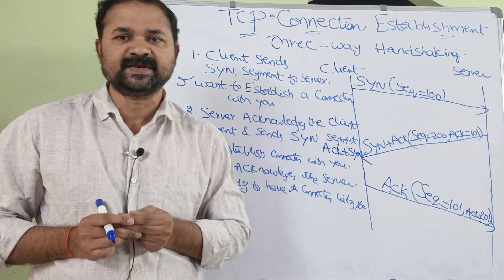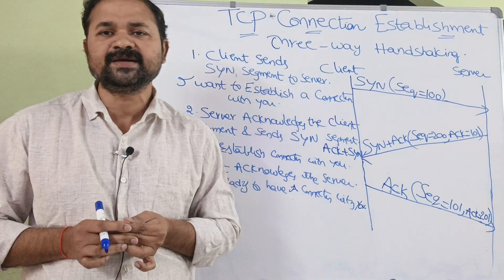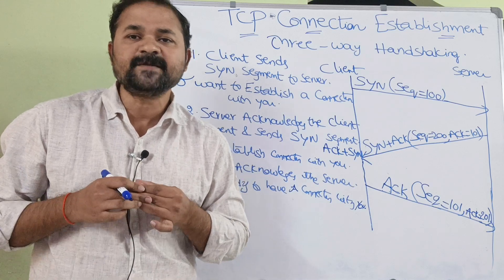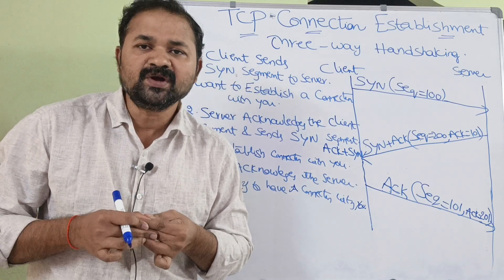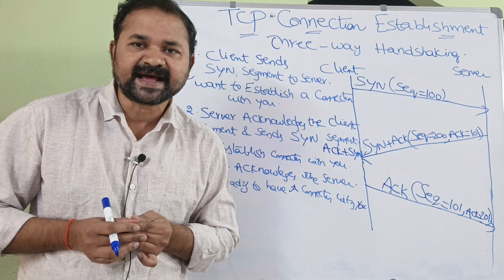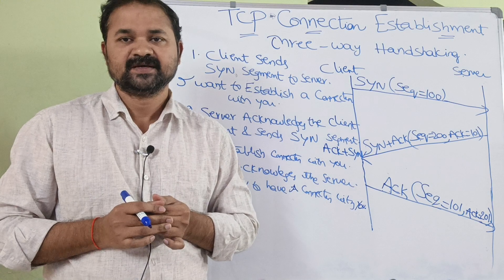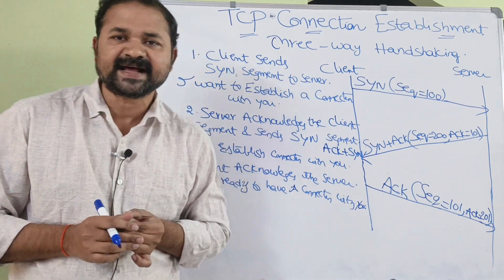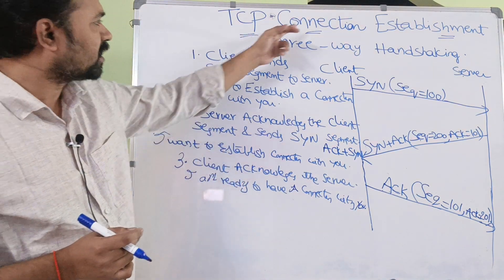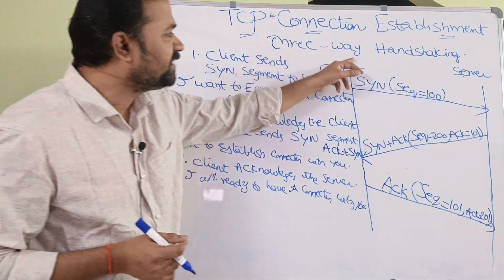How will the connection be established between the client and the server? After establishment, the transferring of data will take place. TCP uses full duplex communication — data will be transmitted in both directions at the same time, simultaneously. For connection establishment, TCP uses three-way handshaking.